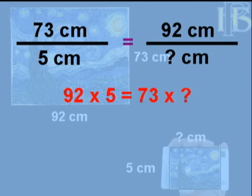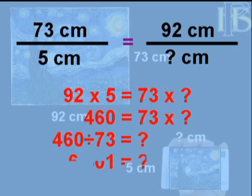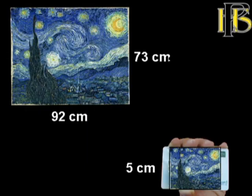So then I can go ahead and cross multiply. I take 92 and multiply it by 5, and I set that equal to the other cross product, 73 times my unknown. I can go ahead, find out what 92 times 5 is, divide both sides by 73, and I find that my unknown length is 6.301, meaning my reduction will be 6.301 centimeters wide.